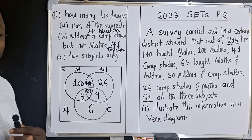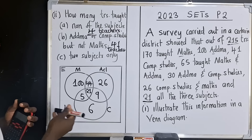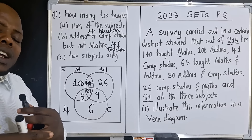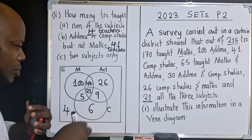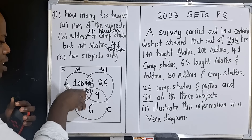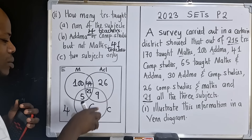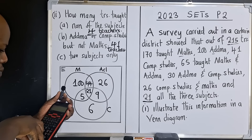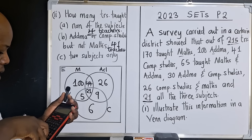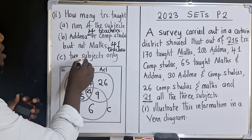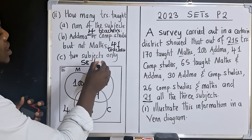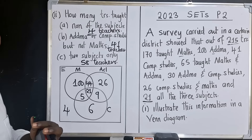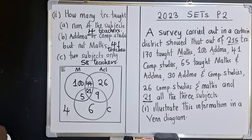The last part asks how many teachers taught exactly two subjects only. The two-subject-only regions are the pairwise intersections excluding the center: 44 (Maths and AdMath only), 5 (Maths and Computer only), and 9 (AdMath and Computer only). Adding these: 44 + 5 + 9 = 58 teachers taught exactly two subjects.